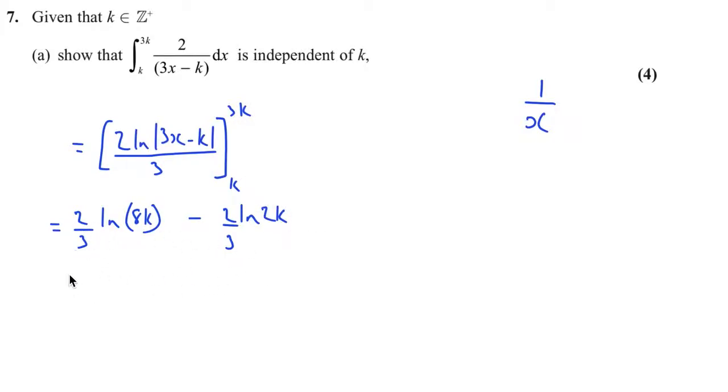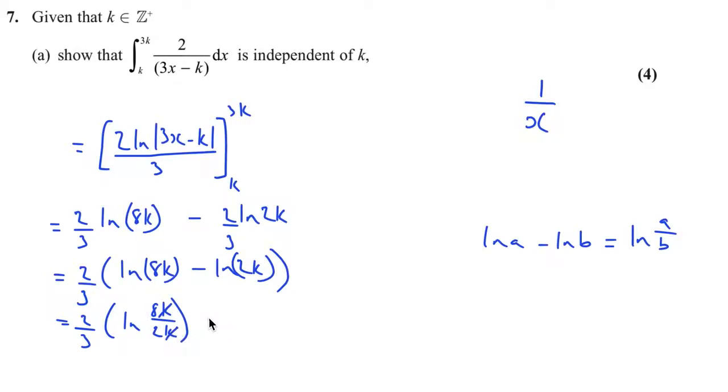Now we've got two thirds here, so if we take that out as a factor we're going to have natural log of 8k minus the natural log of 2k. Now we can use our division rule which says that the natural log of a minus the natural log of b is the same as the natural log of a over b. So I can write this as the natural log of 8k over 2k. The k's cancel and that gives me two thirds of the natural log of 4, and this is independent of k because there are no k's in the answer.